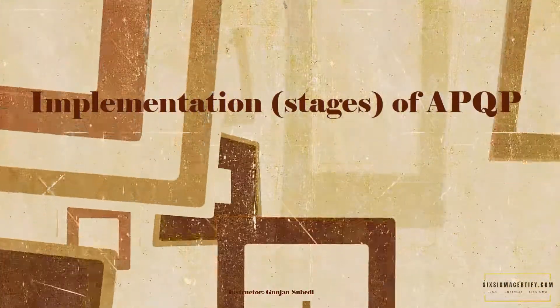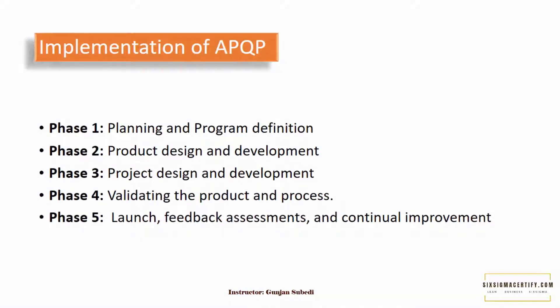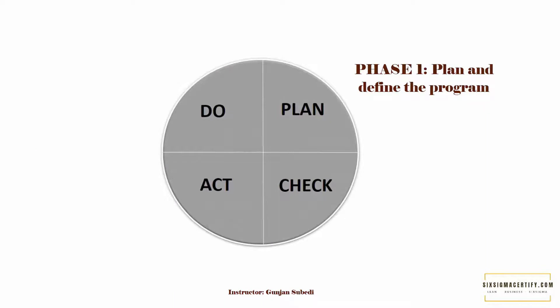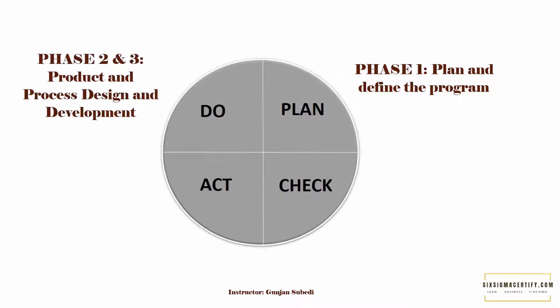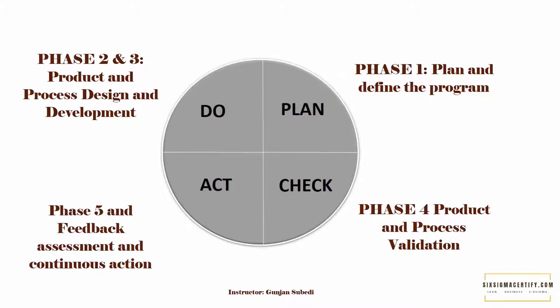We have now reached the implementation phase of APQP. Generally, there are five planning stages, but with the introduction of pre-planning or phase 0, some books mention six stages. These stages are: pre-planning or phase 0, phase 1 planning and program definition, phase 2 product design and development, phase 3 process design and development, phase 4 validating the product and processes, and phase 5 launch, feedback assessments and continual improvement. APQP is also a continuous quality improvement process which follows the PDCA — Plan, Do, Check and Act — cycle. These five phases can be categorized into one of the four PDCA cycles.